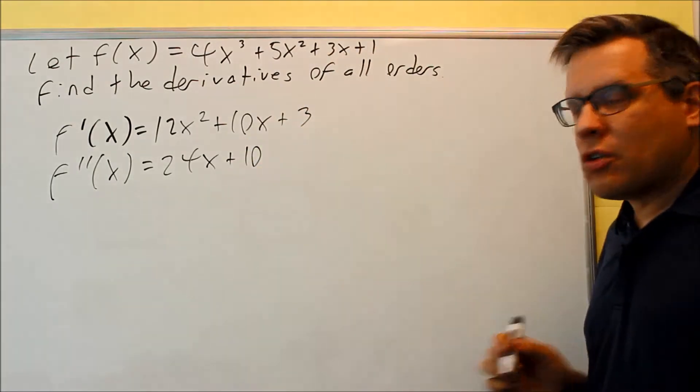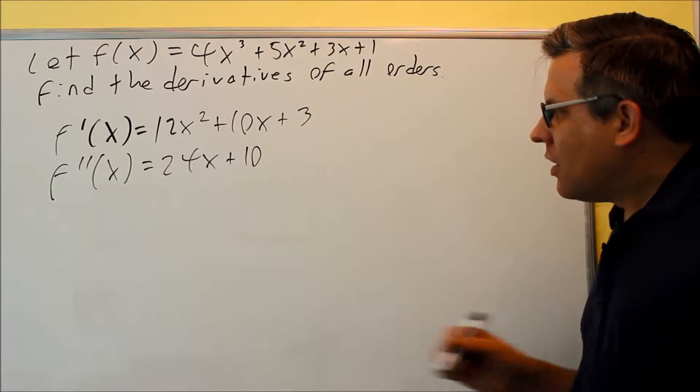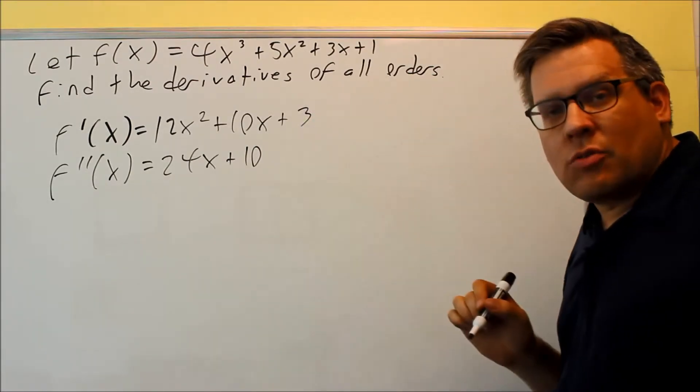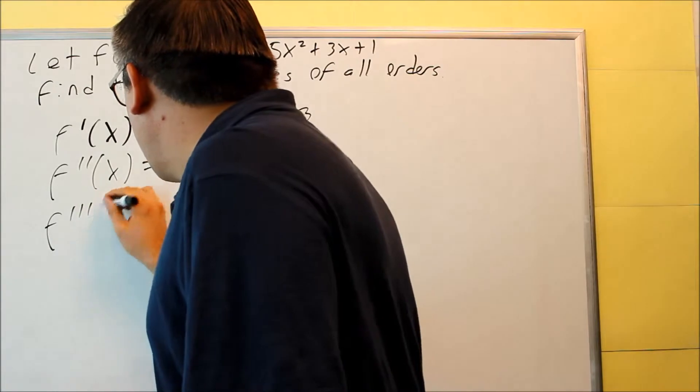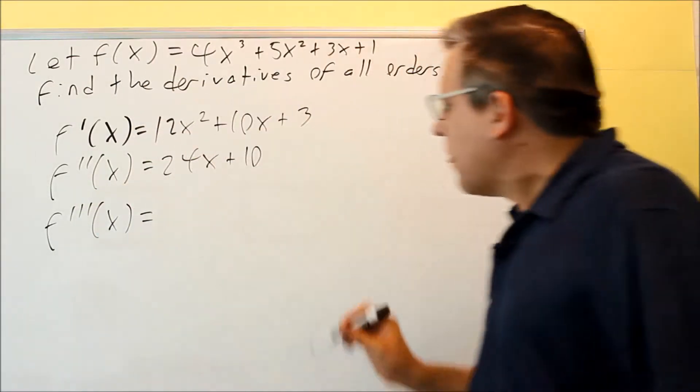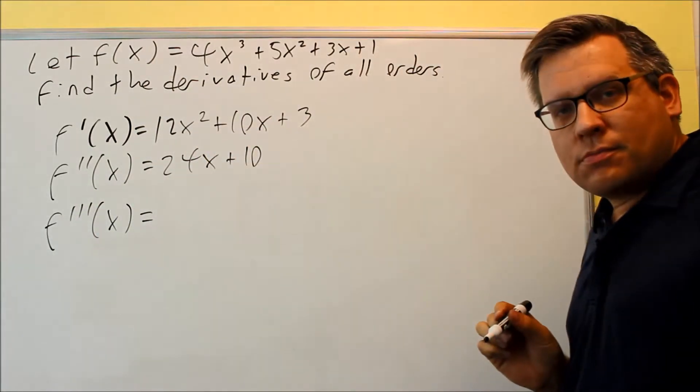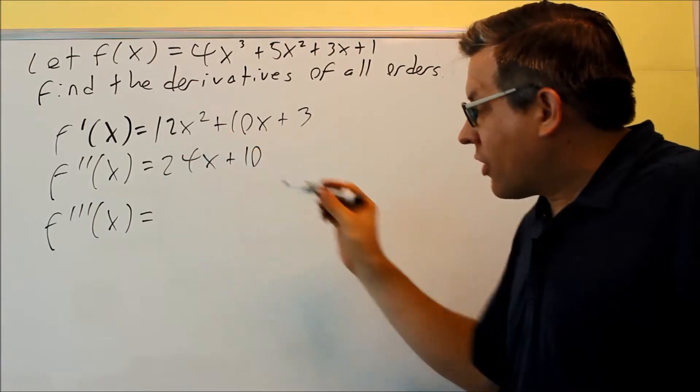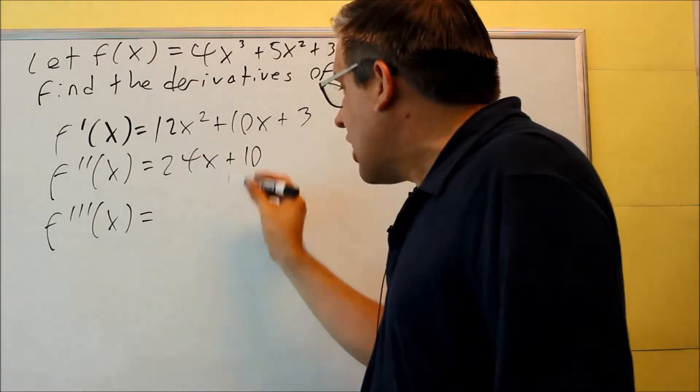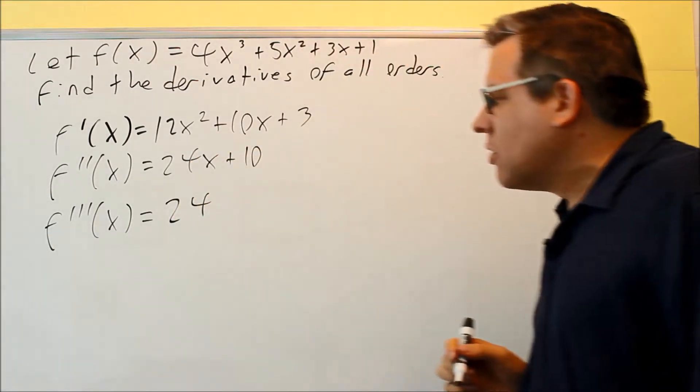You're just left with the constant. When you take the derivative, you get 10. That's going to be it. Derivative of 3 is going to be zero. Next we're going to find the third derivative. We're taking the derivative of this one, derivative of the constant, constant times x. You just get the constant. You're going to get 24.